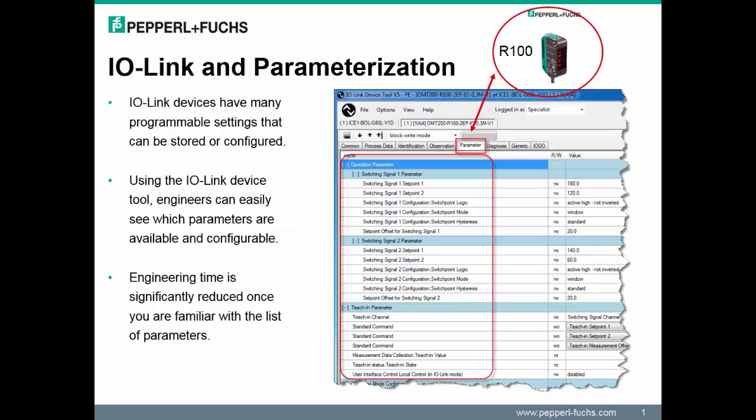This screen is a sneak peek into the IO-Link device tool that we will be speaking more about in Session 3. The immediate benefit of this tool is that it provides user interface screens. After connecting to a single or multiple IO-Link devices, the IO-Link device tool clearly displays the large quantity of parameters and diagnostics available for the connected IO-Link devices.